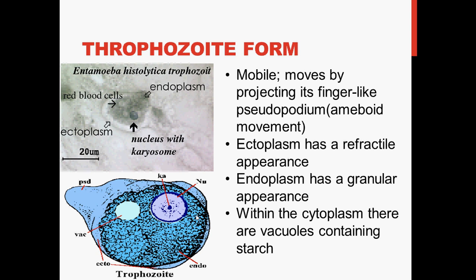The endoplasm has a very granular appearance. Endoplasm is the inner granulated part of the cell's cytoplasm. Within the cytoplasm, there are vacuoles containing starch in the trophozoite form, which usually decolorizes iodine, turning it blue-black in color.